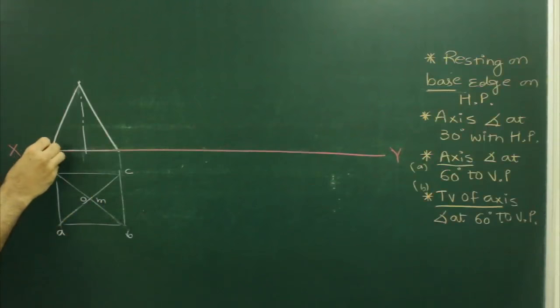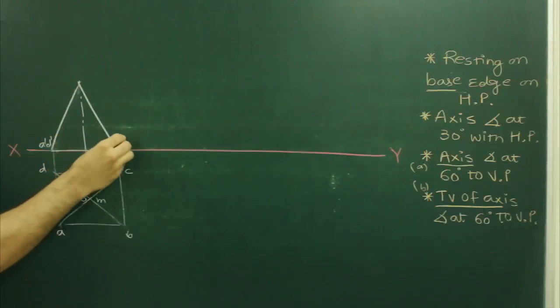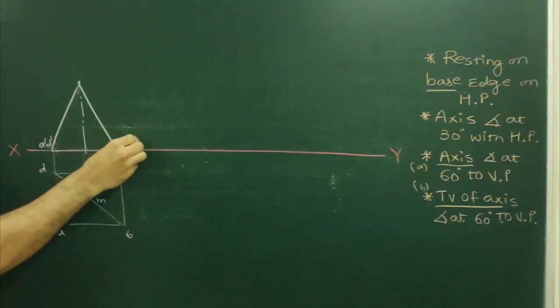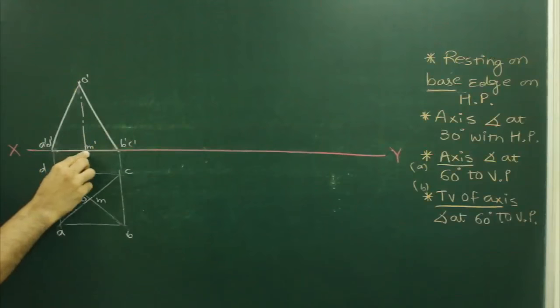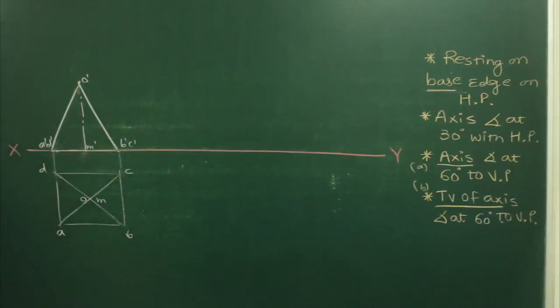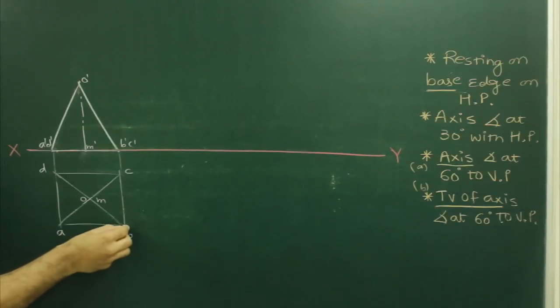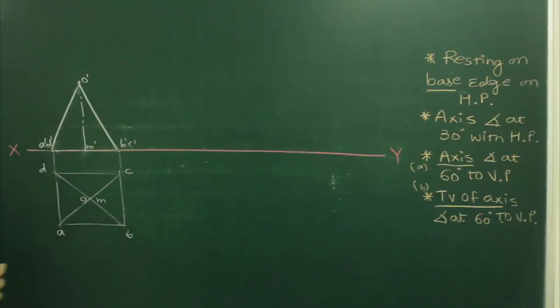We label the front view points as A dash, D dash, C dash, O dash, and N dash. This completes the first stage. Now for the second stage, where the axis is inclined at 30 degrees to HP.